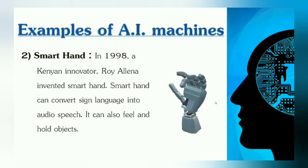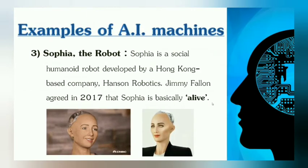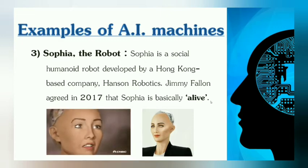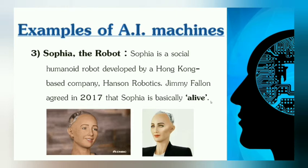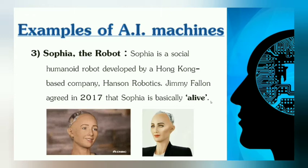It is very helpful for those who can't speak. The third is Sophia, a robot. Sophia is a social humanoid robot developed by the Hong Kong-based company Hanson Robotics. In 2017, Jimmy Fallon agreed that Sophia is basically alive. She can talk, mimic human actions, feel, and show many expressions.